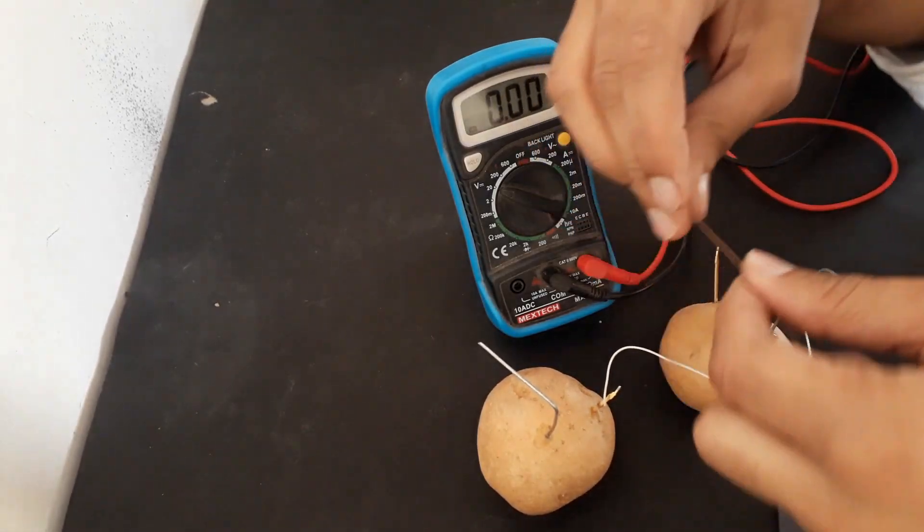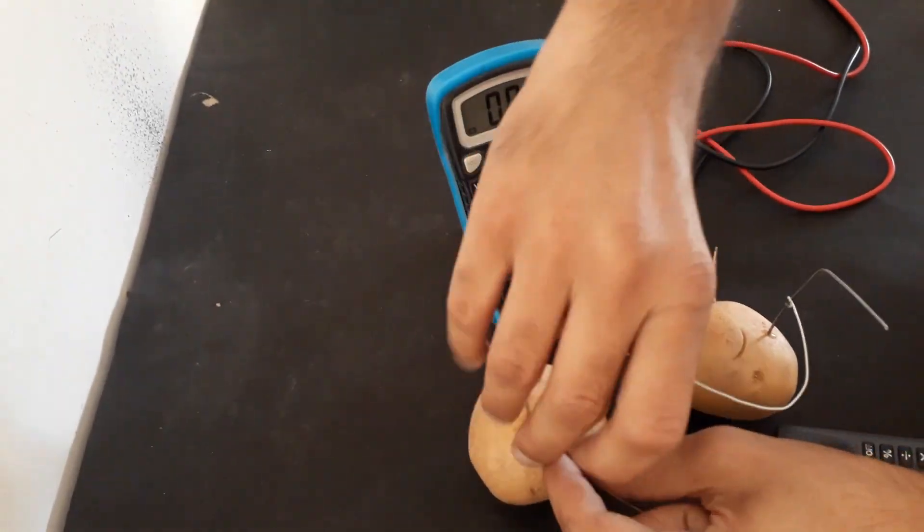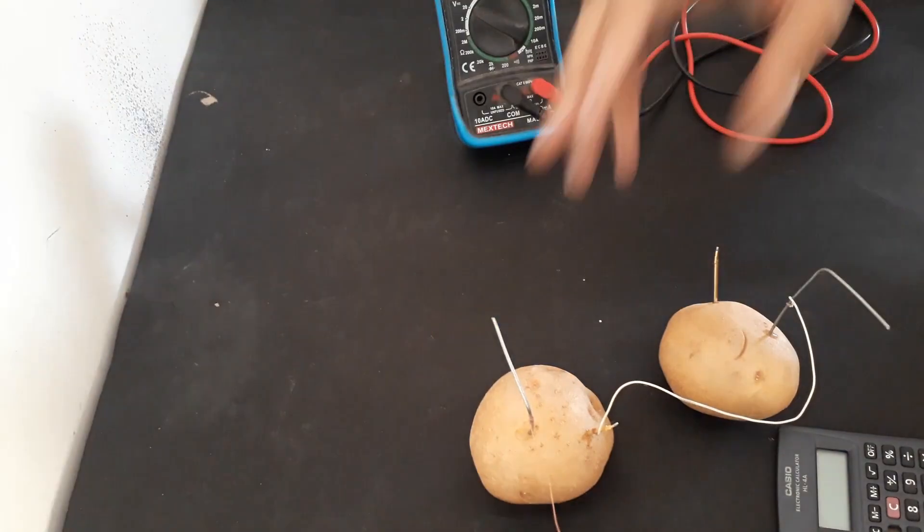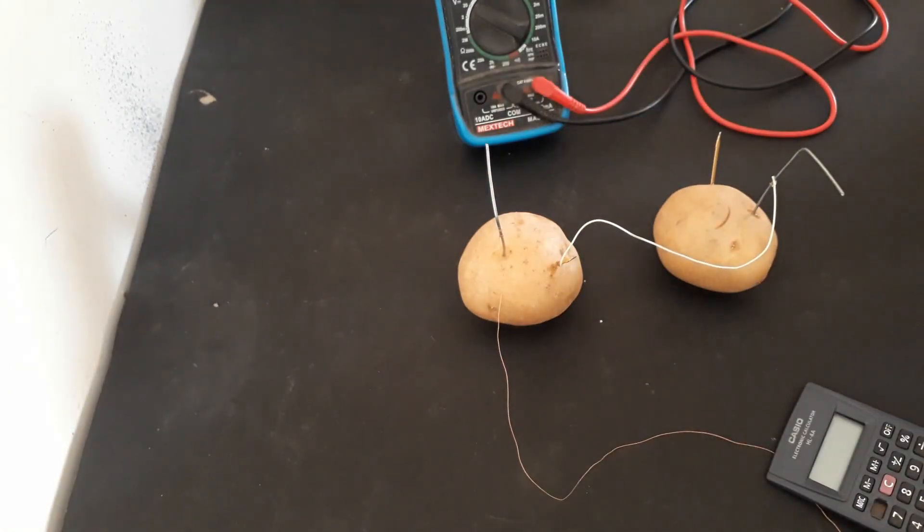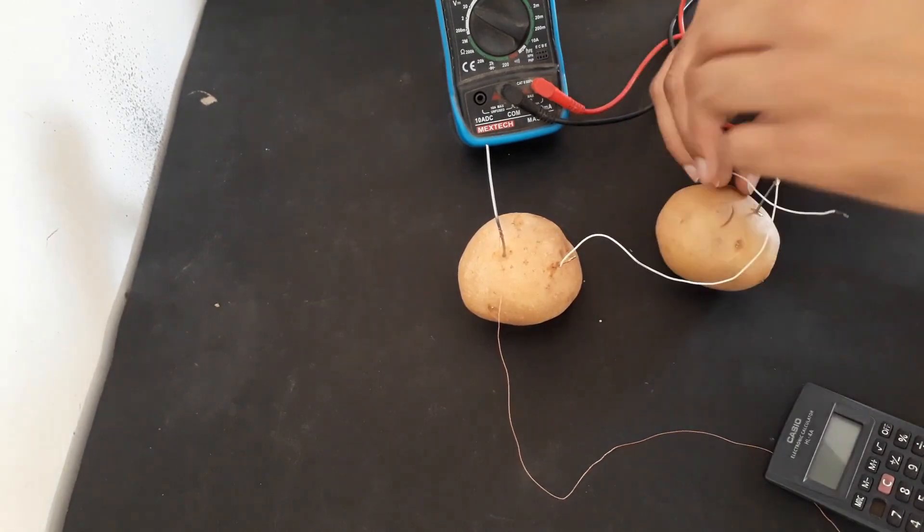And now we just connect the wire with the calculator. The wire with the nail is negative and the wire with the copper is positive.